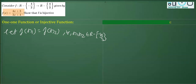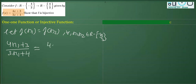Now if I replace x with x₁, what we are going to get is (4x₁ + 3)/(3x₁ + 4), and for x₂ we are going to get (4x₂ + 3)/(3x₂ + 4). Now we'll do cross multiplication to simplify it further.